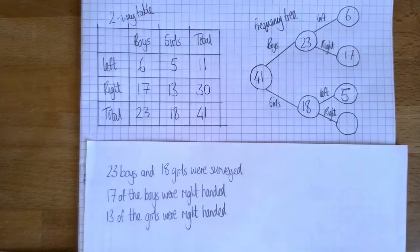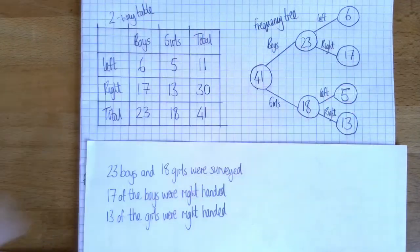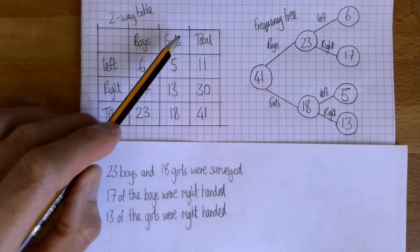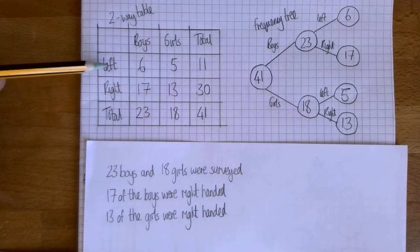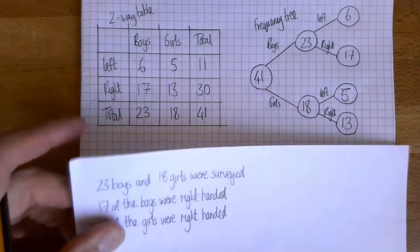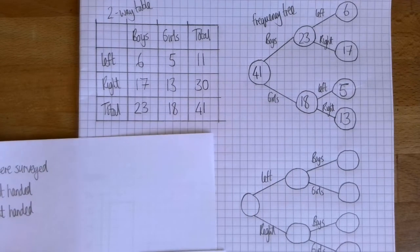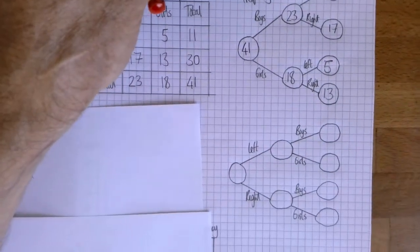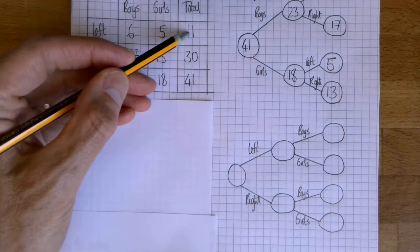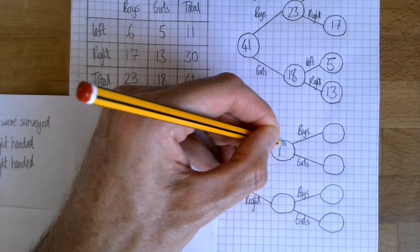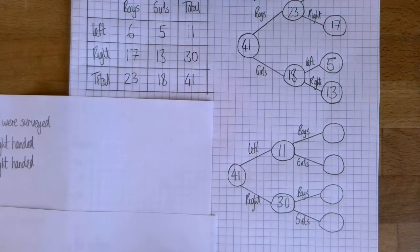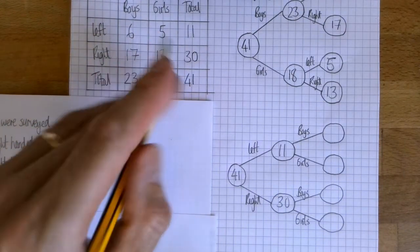Now the two-way table I could have done it the other way around. I could have had left-handed and right-handed here and boys and girls here. I can do the frequency tree in two different ways as well. So I could have, with my frequency tree, started by splitting the people into left-handed and right-handed. So that was 11 left-handers and 30 right-handers.